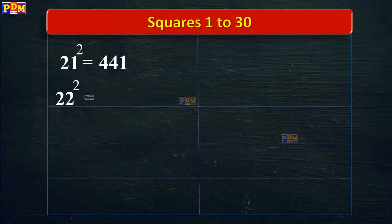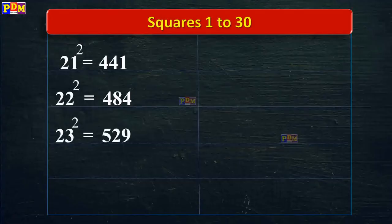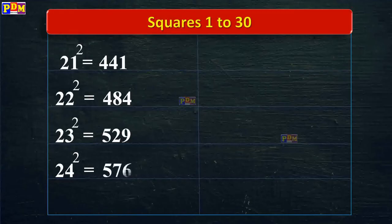22 square is equal to 484. 23 square is equal to 529. 24 square is equal to 576. 25 square is equal to 625.